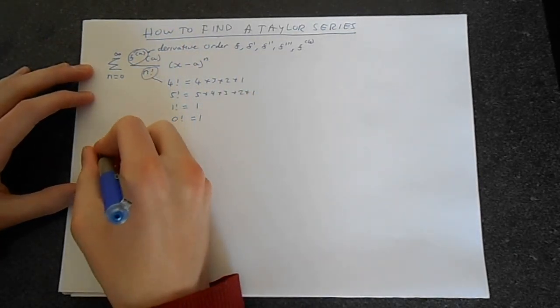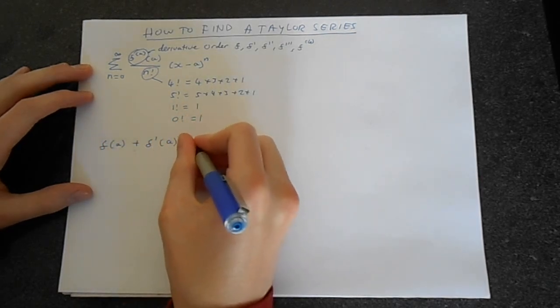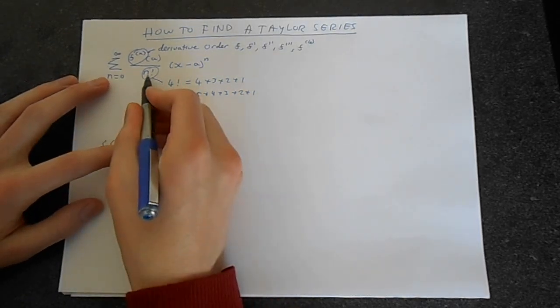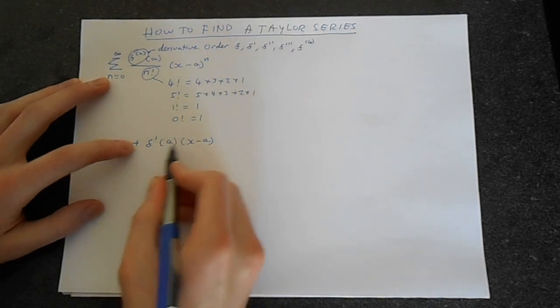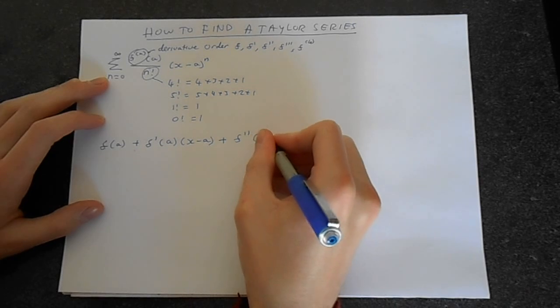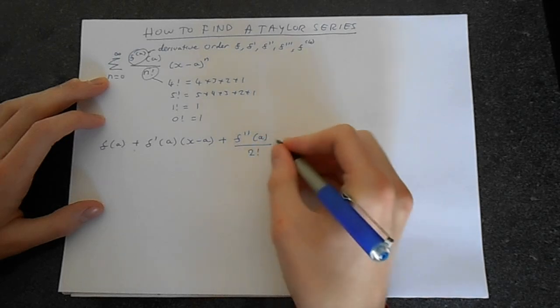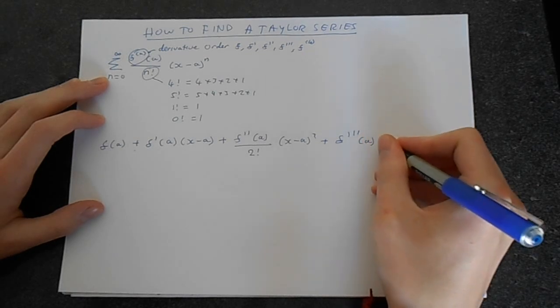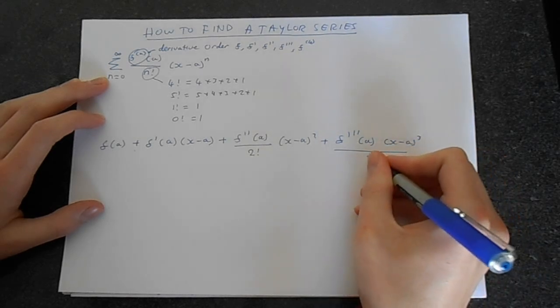We get f of a plus f dash of a times x minus a. See this, when this is 1, we get 1 factorial, which is just 1. This is f dash when n is 1, and this is just x minus a, hence this term here. Let's keep going. f double dash of a over 2 factorial. This is when n is 2. We've got x minus a squared plus f triple dash a. Then we've got x minus a cubed over 3 factorial.